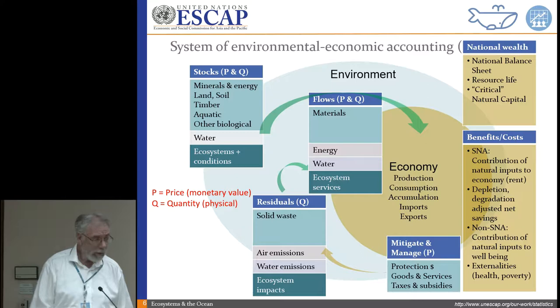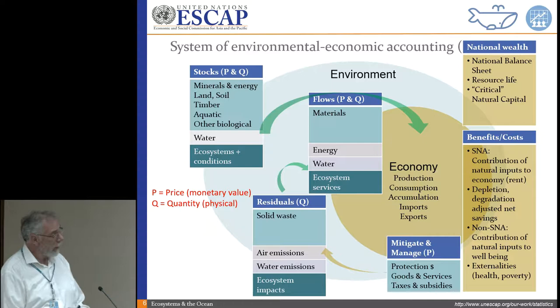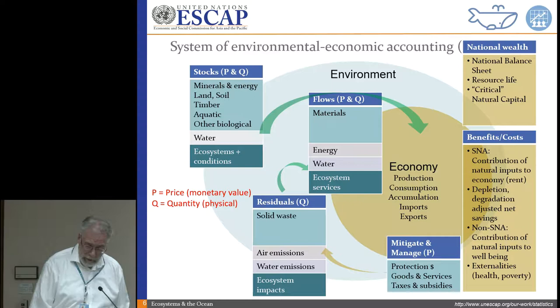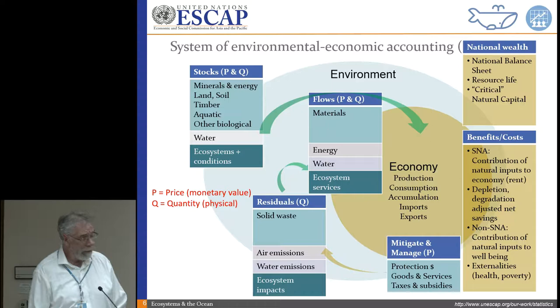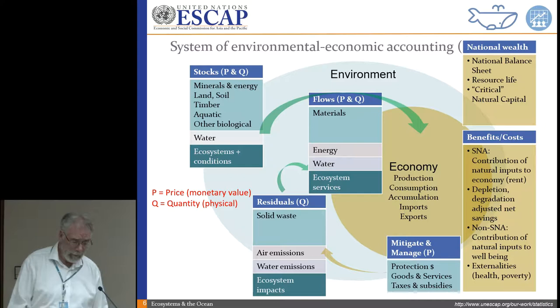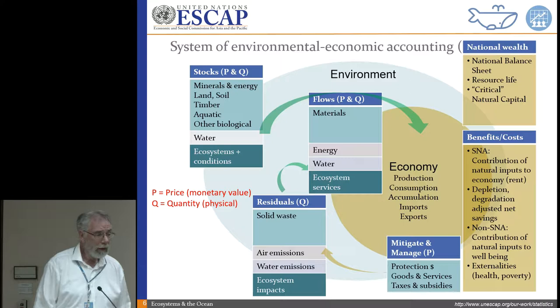You can do some interesting analyses with the assets — calculate things like the resource life, calculate costs and benefits, and get more realistic indicators of economic performance. But the SEEA central framework accounts for the natural inputs of the economy as individual commodities. It usually focuses on national-level statistics, and it doesn't include all of the things we think of as ecosystem services, where living and non-living units work together to provide us with services.